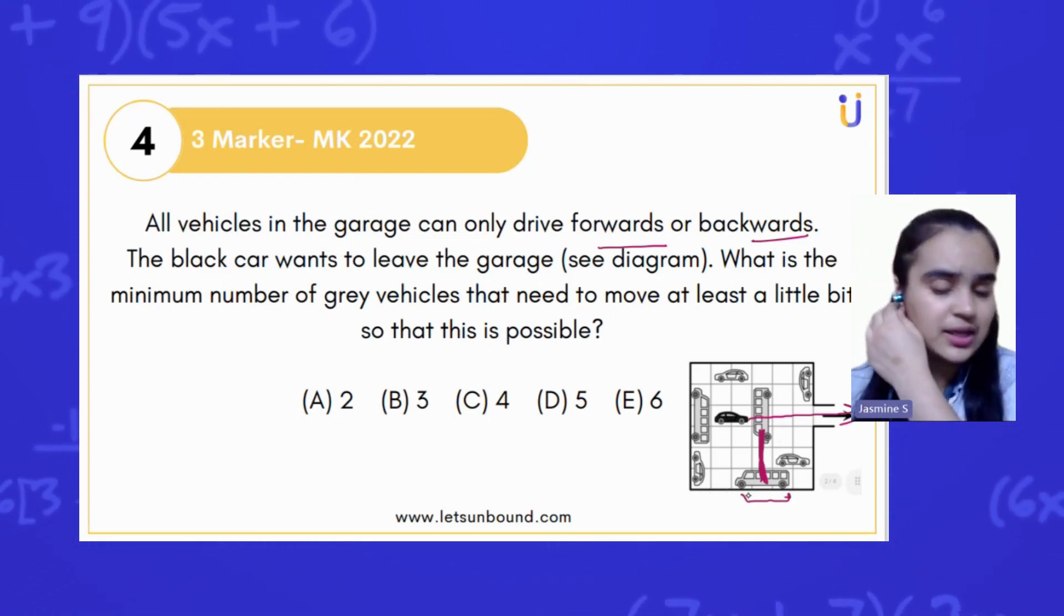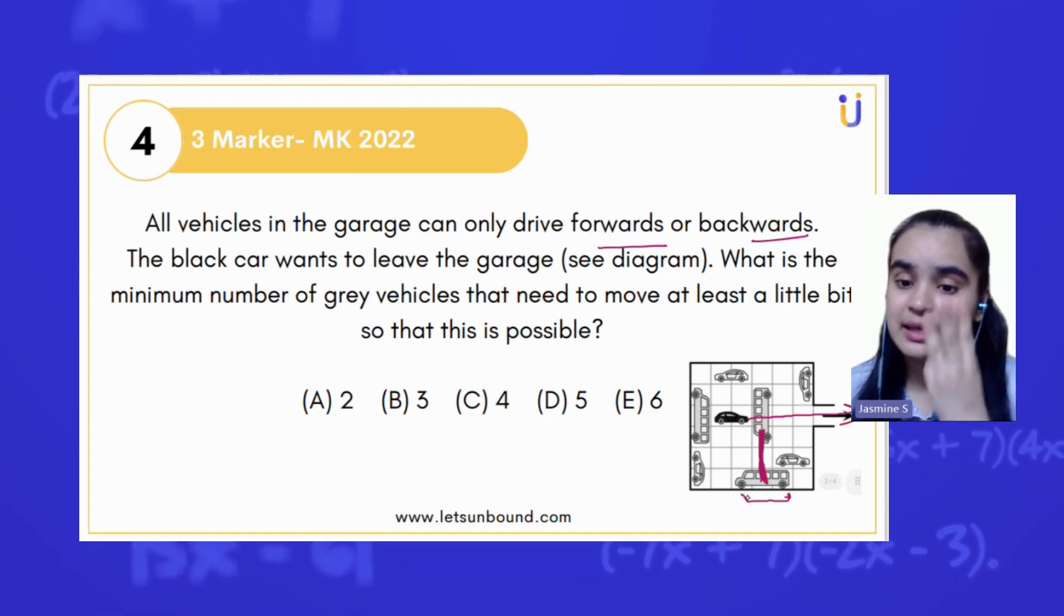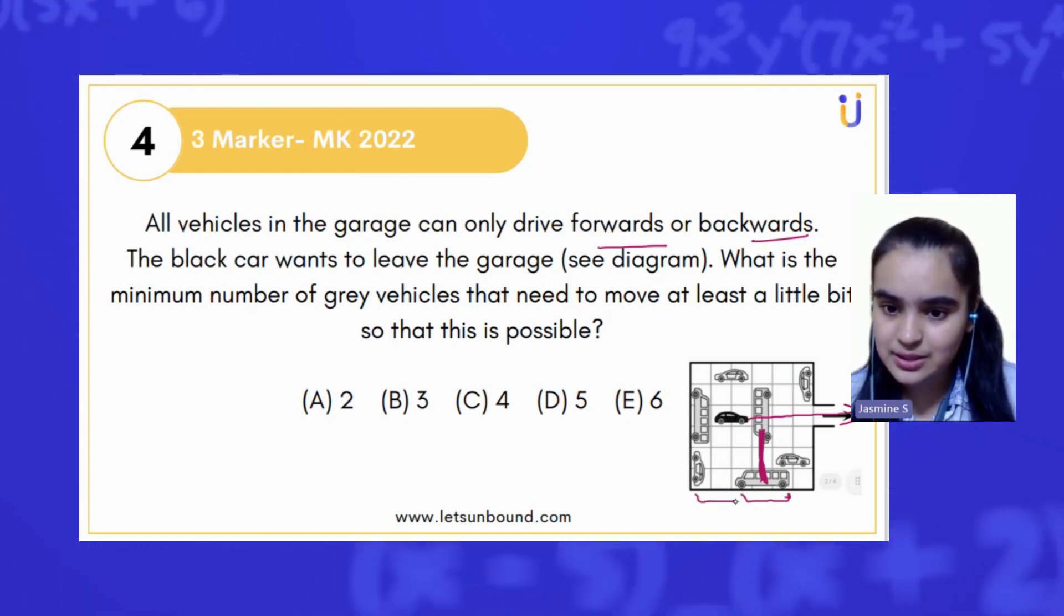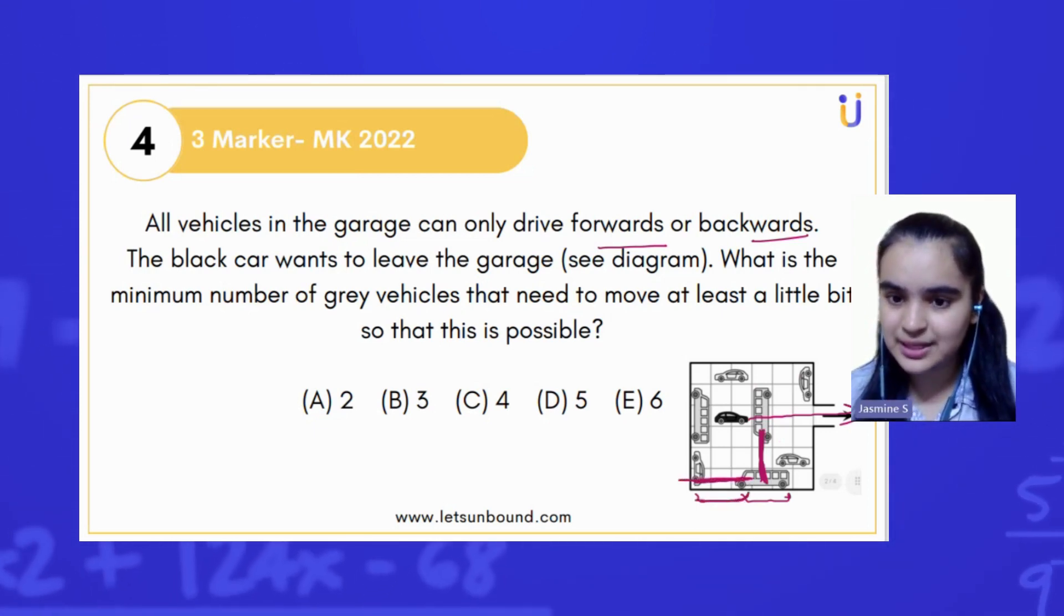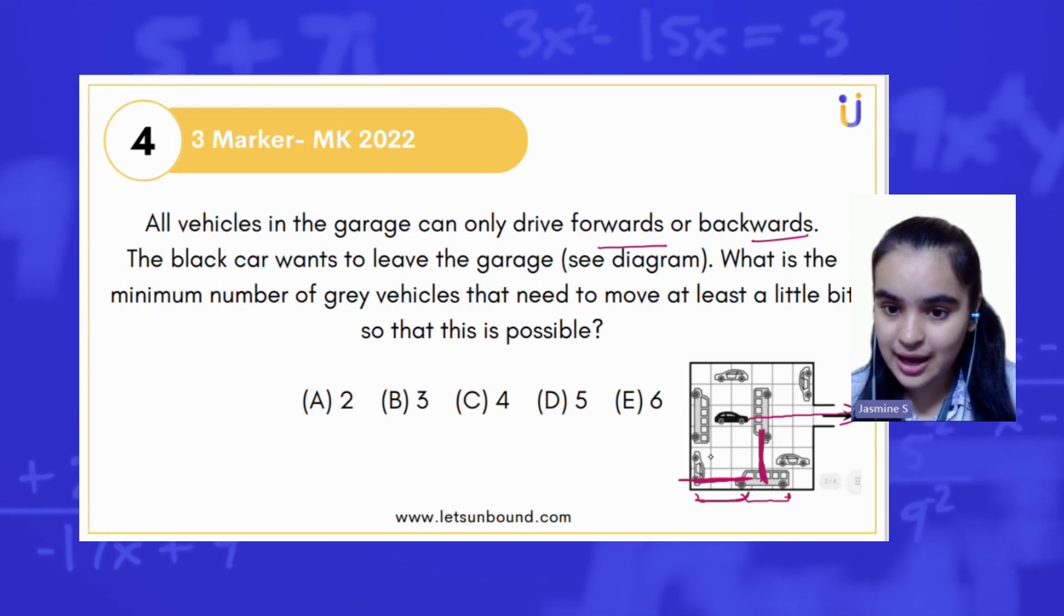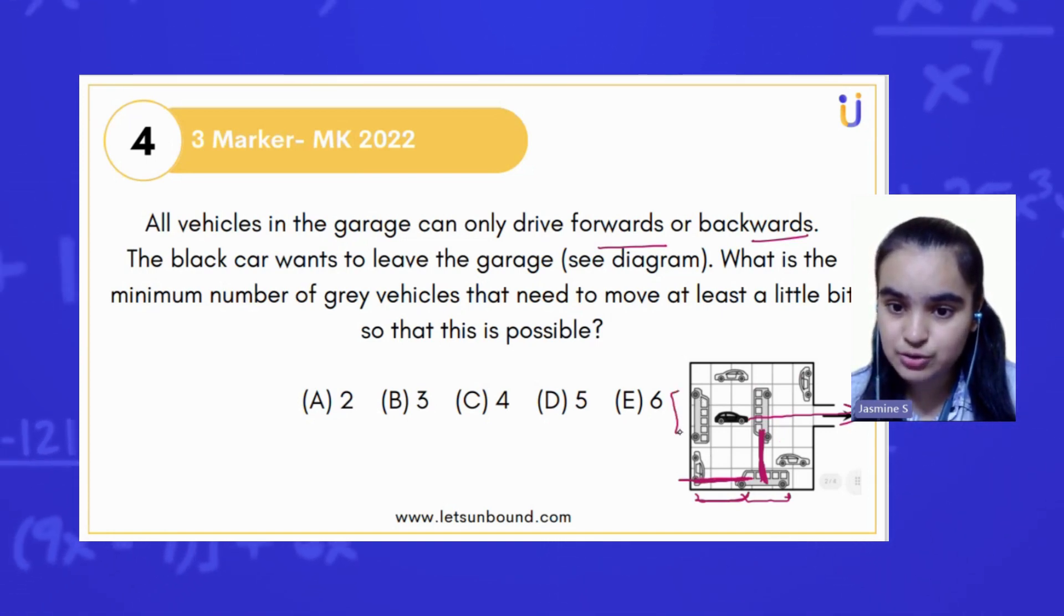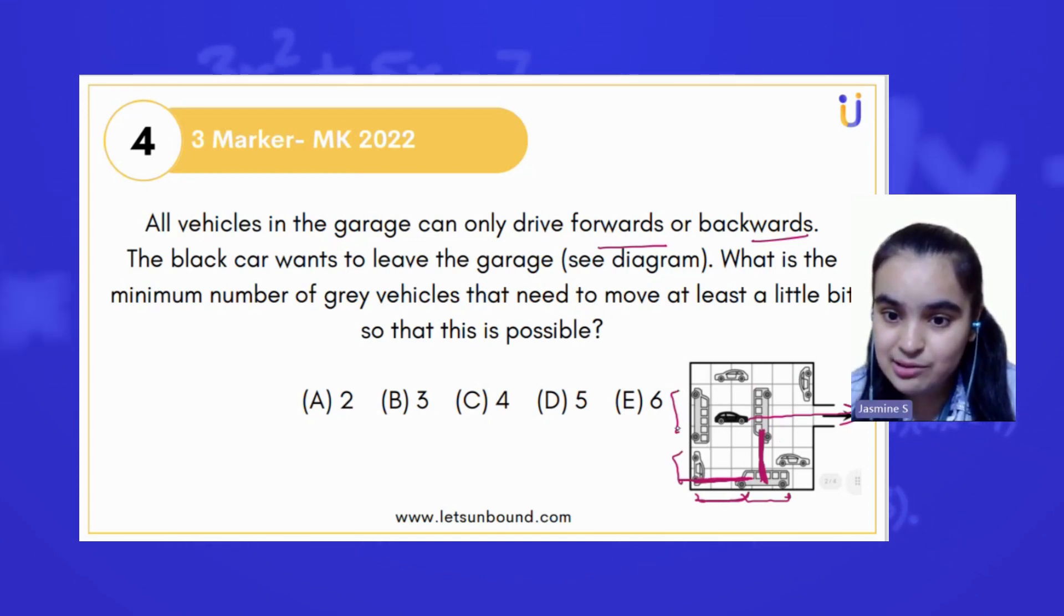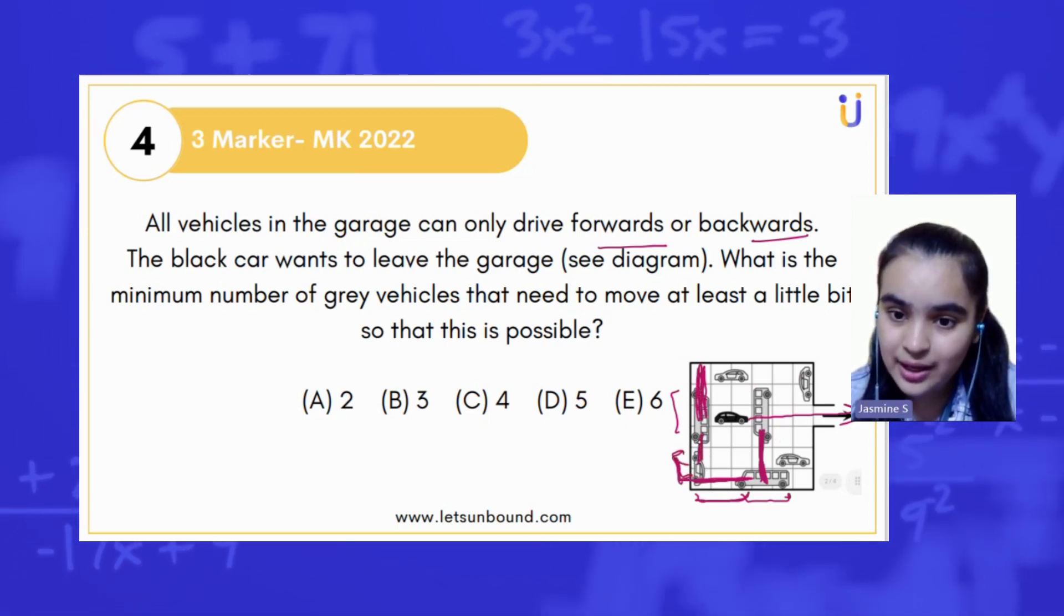And if you can see, this vehicle is also taking three boxes, the space of three boxes. That means we can adjust this car here. For that, we have to move these two cars above, one step above. As this is also consuming three boxes, so it will go here. And the other small car will go here.